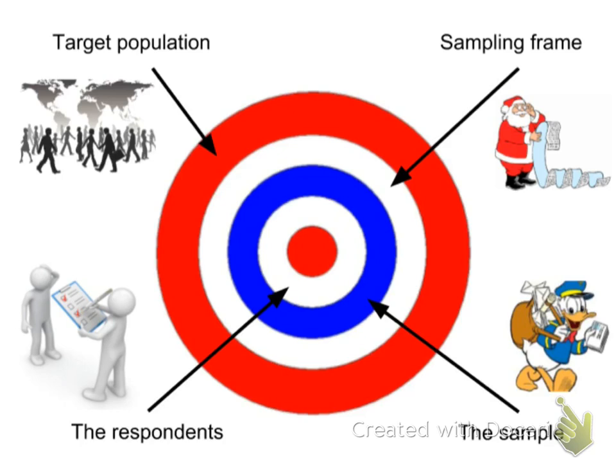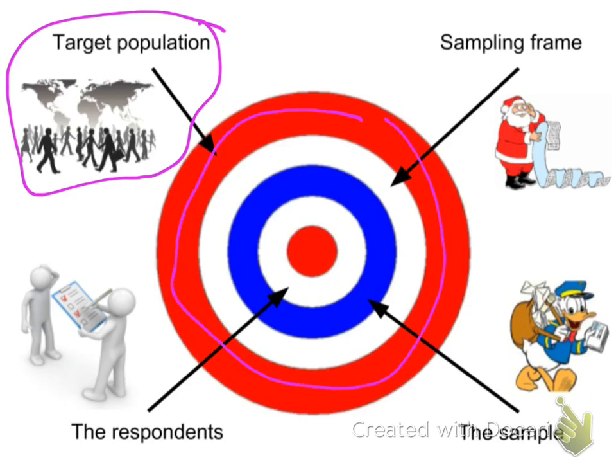So I start with some kind of target population, and I define who that target population is. That's kind of like my outer ring of my target here. And so that's what I start with. That's who I want to gather information from.